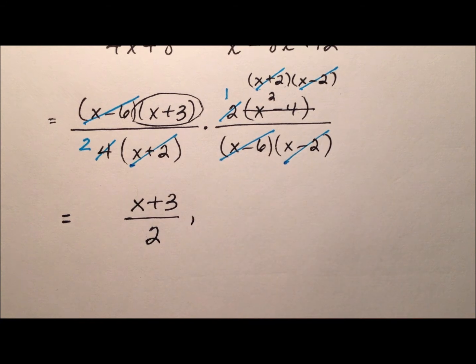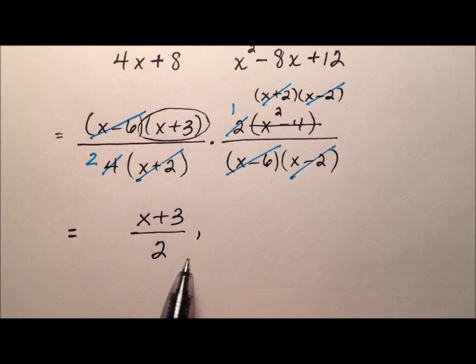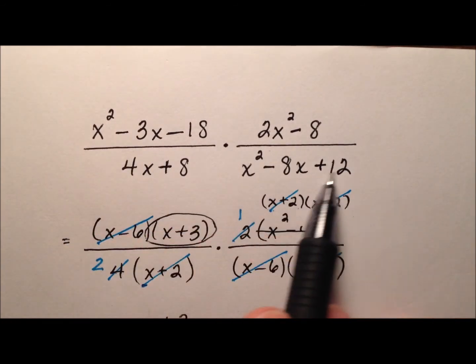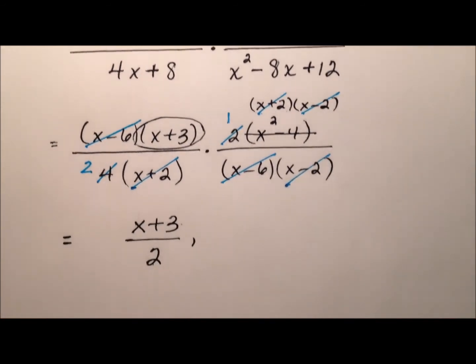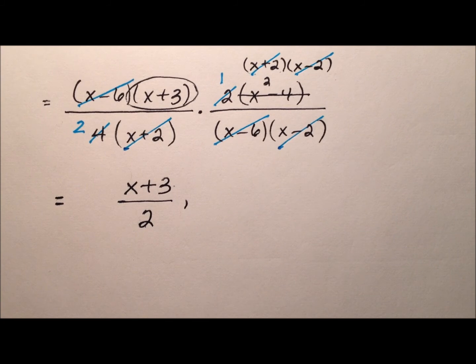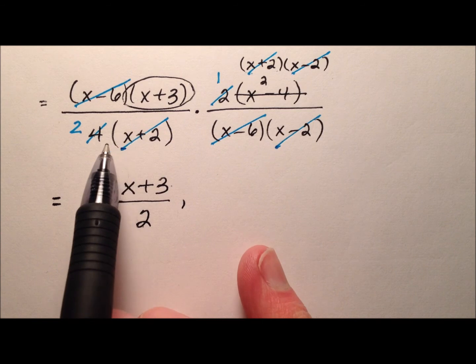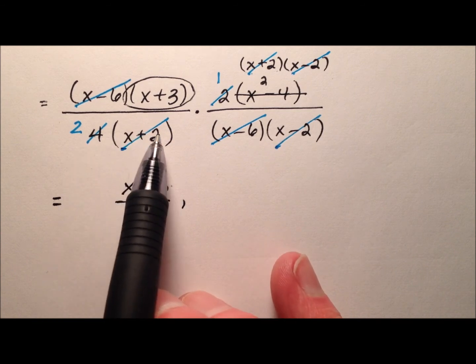But in order to create equivalent expressions, I know that (x + 3)/2 is the same as this big multiplication problem. But I need to take into consideration values of x that we cannot have. We canceled out the x + 2.